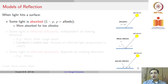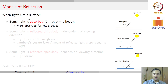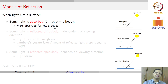Starting with how light gets reflected off a surface, the more typical models of reflection state that when light hits a surface, there are three simple reactions possible — there are more than three, but three simple ones to start with. Firstly, some light is absorbed, and that depends on a factor called albedo, rho. Typically, when you have a surface with low albedo, more light gets absorbed, so the absorption factor is 1 minus rho.